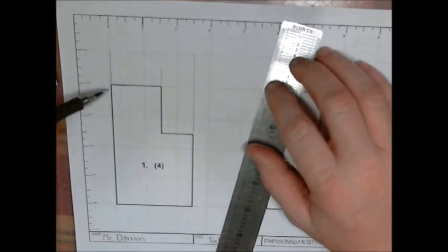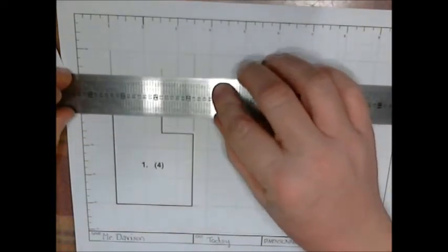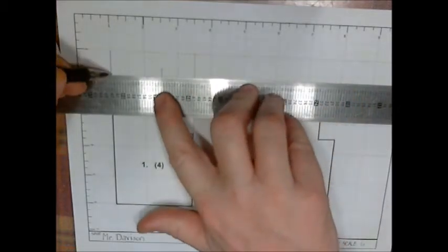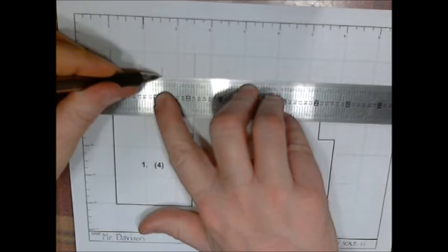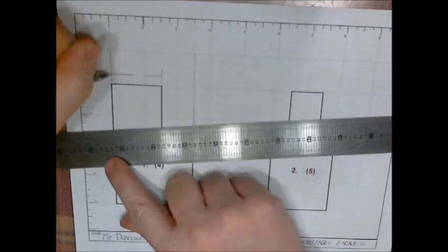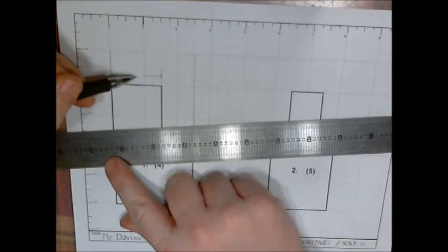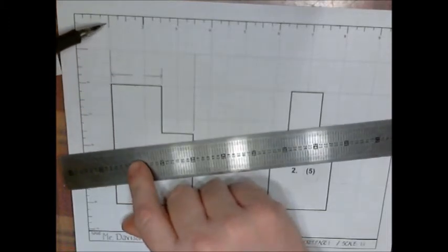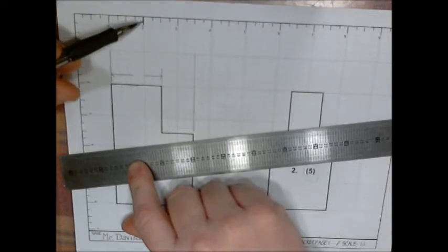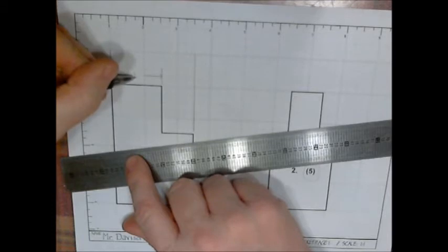I am going to do my dimension line with arrowheads, and then if you look, this is one inch and a half, so one point five.